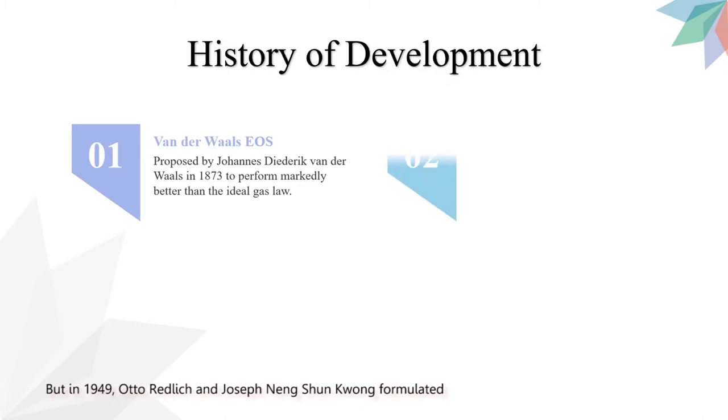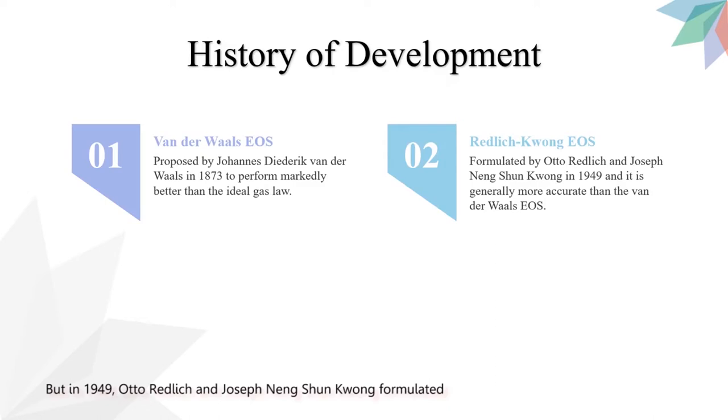But in 1949, Otto Redlich and Joseph Neng-Shun-Kwong formulated Redlich-Kwong equation of state and it is generally more accurate than the van der Waals' equation of state.